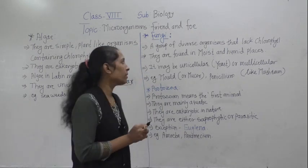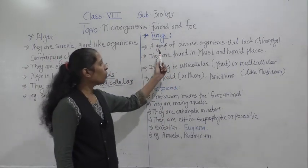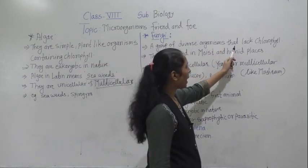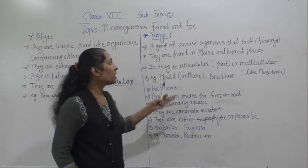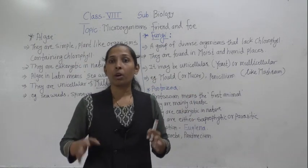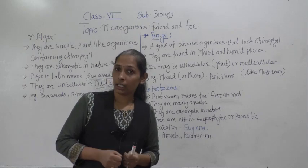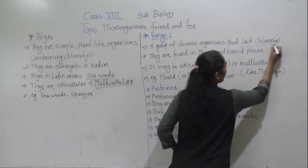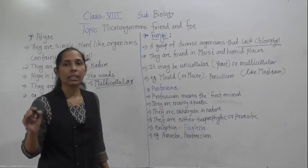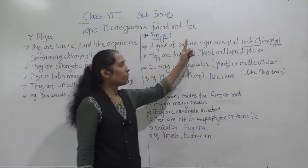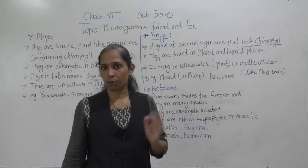The fourth major group of microorganisms is fungi. Fungi are a group of diverse organisms that lack chlorophyll. Diverse means there is a variety of fungi present on Earth. The very important characteristic is that fungi lack chlorophyll — there is an absence of chlorophyll in fungi.